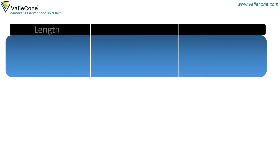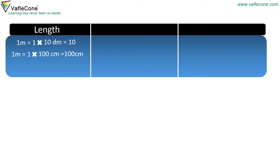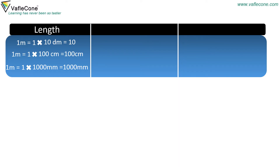Length: 1 meter is equal to 1 × 10 decimeters, which equals 10 decimeters. 1 meter is equal to 1 × 100 centimeters, which equals 100 centimeters. 1 meter is equal to 1 × 1000 millimeters, which equals 1000 millimeters.